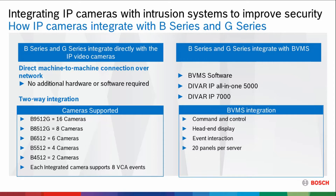Depending on the alarm panel, it will support a different number of cameras, going all the way up to 16 cameras supported in our 9512G panel. Each camera that is connected can support up to eight VCA, or video content analysis, events. So each camera can do eight things, or actually take up eight inputs on the alarm panel.